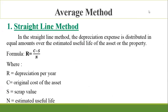Since our topic is the average method of depreciation, we have the straight line method. In the straight line method, the depreciation expense is distributed in equal amounts over the estimated useful life of the asset. The formula is: R = (C - S) / N, where R is the depreciation per year, C is the original cost of the asset, S is the scrap value, and N is the estimated useful life.